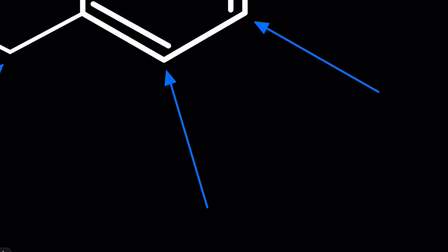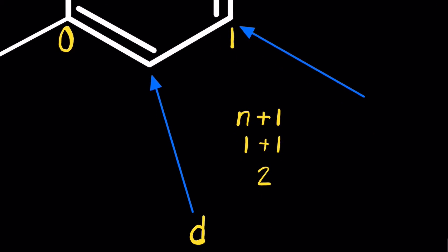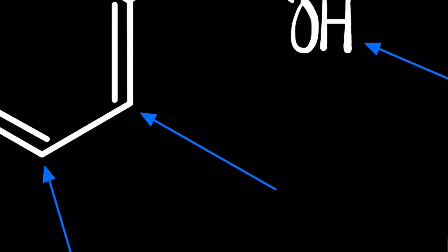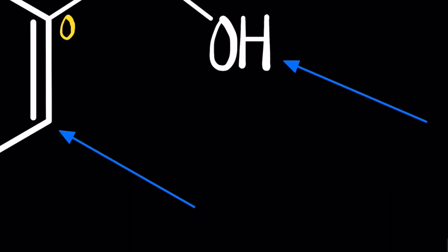Looking at this next carbon and the hydrogen attached to it — there are zero hydrogens attached to the neighboring carbon on one side, and one hydrogen attached to the neighboring carbon on the other side. N plus 1: one plus one equals two. This will be a doublet, denoted with D. The next hydrogens in the spin-splitting: one hydrogen here, zero hydrogens here. This will be another doublet. Keep in mind the N+1 rule.